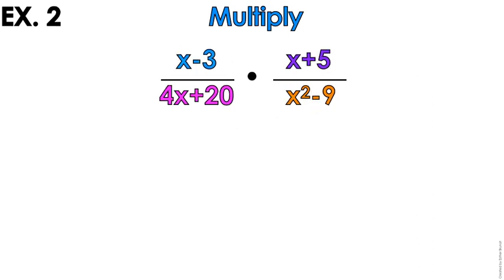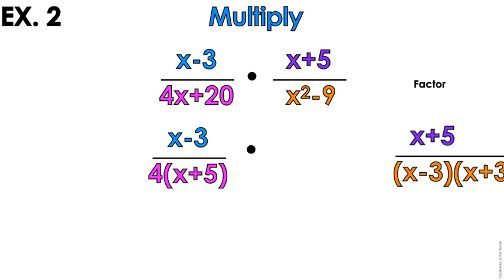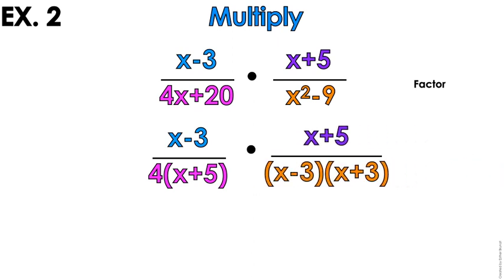Example number 2 out of 6. These are not monomials, these are binomials. So I'm going to factor what I can factor before I multiply across. The pink part 4x plus 20 has a GCF of 4. I want to make sure I factor out that GCF. The orange part is the difference of two squares, so I want to make sure I say x plus 3, x minus 3. Ta-da!